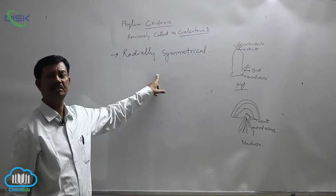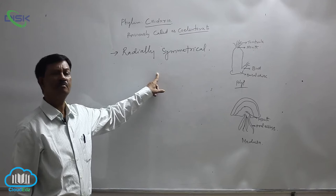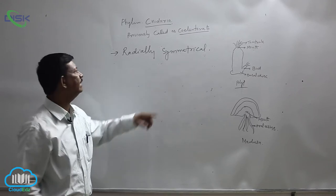Most of the cnidarians are radial, they show the radial symmetry, but some animals show the biradial symmetry also.